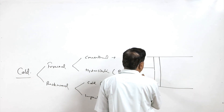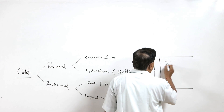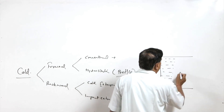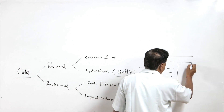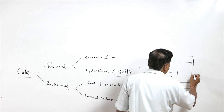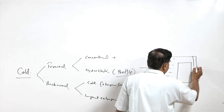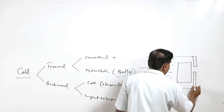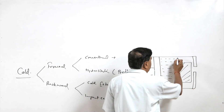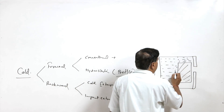The billet is placed in the container and is surrounded by the fluid on one side, with a die opening on the other side.